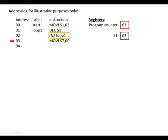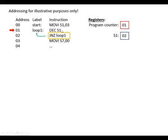The next instruction — jump non-zero — says: if the result of the previous operation was not zero, jump to the address of label loop one. So we load address 01, which corresponds to loop one, into the program counter. The program counter now holds 01, so we carry out that line next.